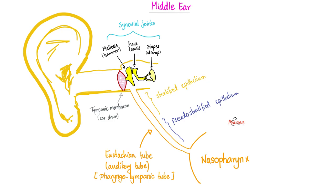Malleus, incus, stapes — hammer, anvil, stirrup. As I get older, what do I get in my joints? Osteoarthritis. Stiffness of the joints. What if that stiffness happened in my synovial joints here in the middle ear? Then your bony ossicles will not vibrate as much, and you will develop conductive hearing loss. Bingo — that is otosclerosis.